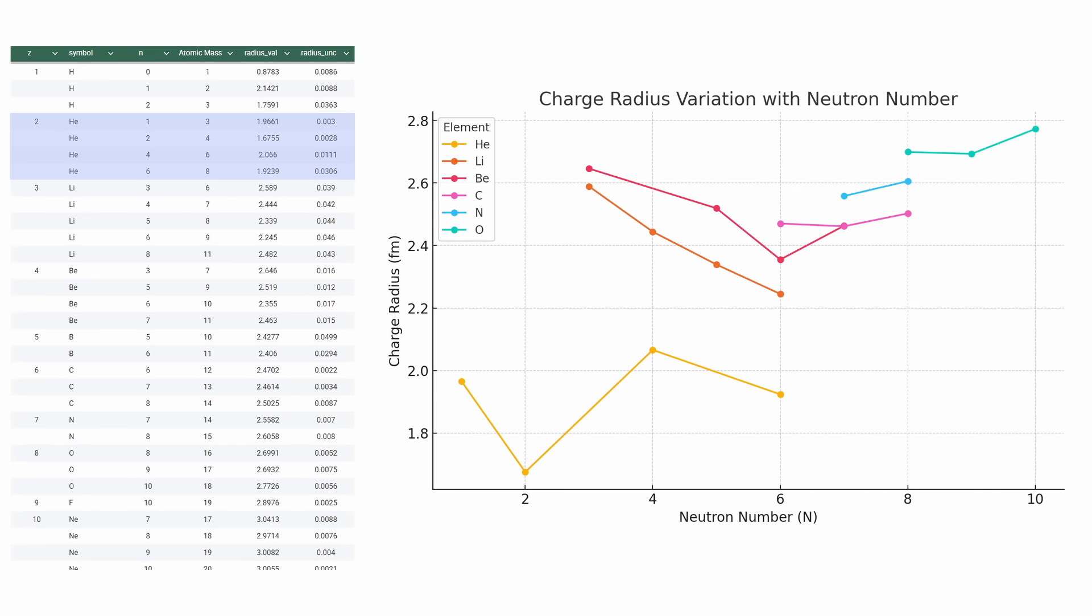For example, in helium isotopes we see a stark deviation. Helium-3 has a charge radius of 1.966 femtometers, while helium-4 is significantly smaller at 1.675 femtometers, despite the addition of only one neutron. However, adding two more neutrons to form helium-6 leads to an expansion back to 2.066 femtometers and helium-8 follows at 1.923 femtometers. Such inconsistencies are difficult to reconcile under the assumption that neutrons merely act as neutral binders that distribute charge smoothly.